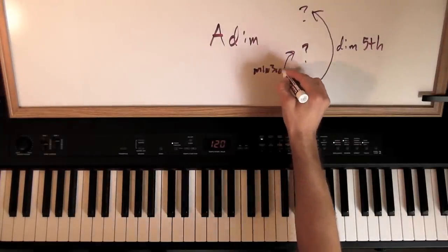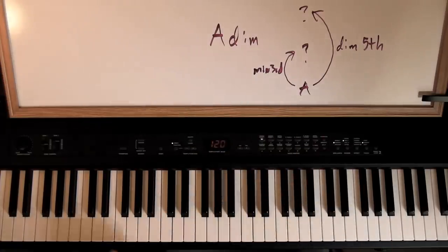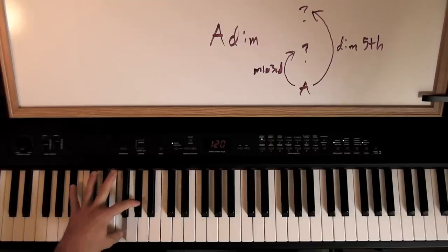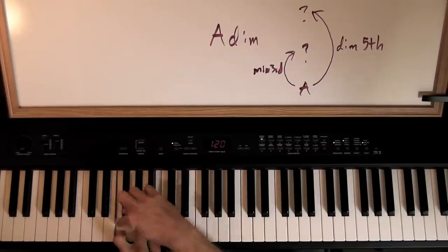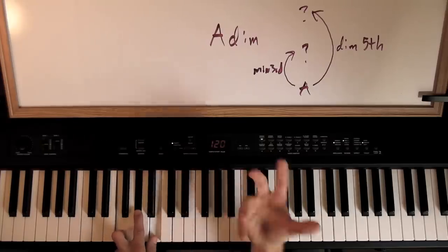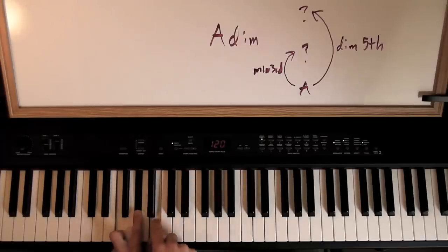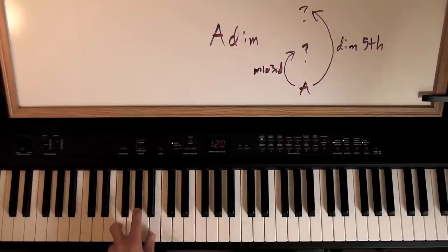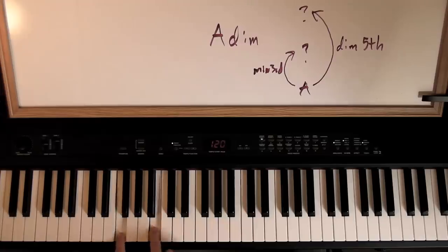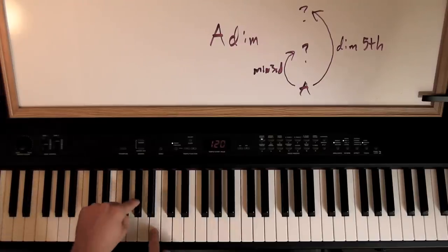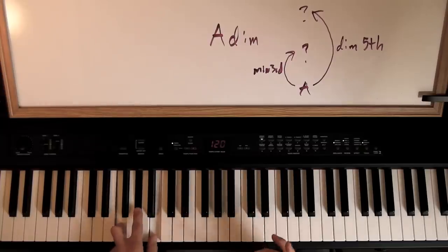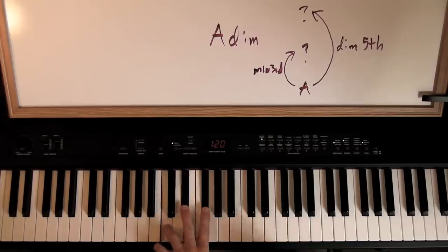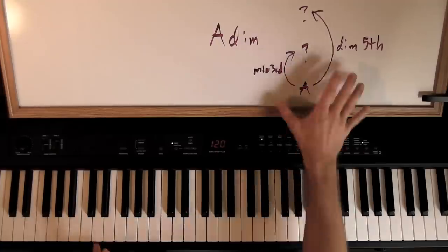So the diminished chord formula is: root, minor third, diminished fifth. A helpful way to think about it: you can also just stack two minor thirds — there's a minor third from the root to the middle note, and another minor third from the middle note to the top. Either way you look at it, same result. This works on any root note — same formula every time.